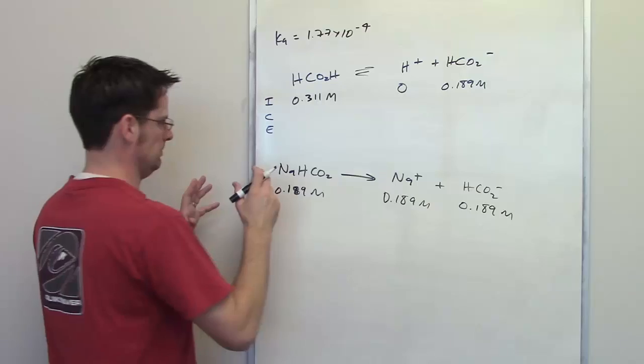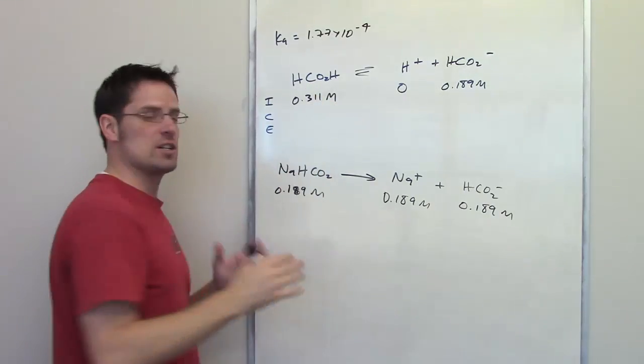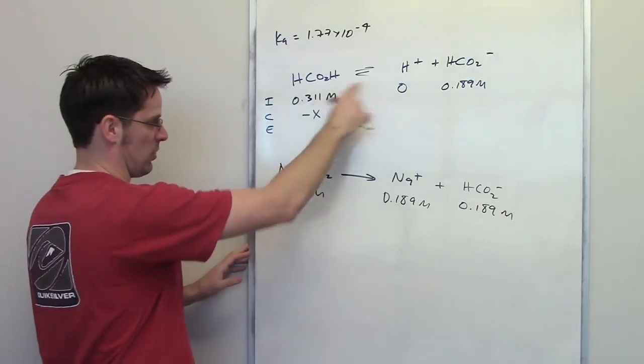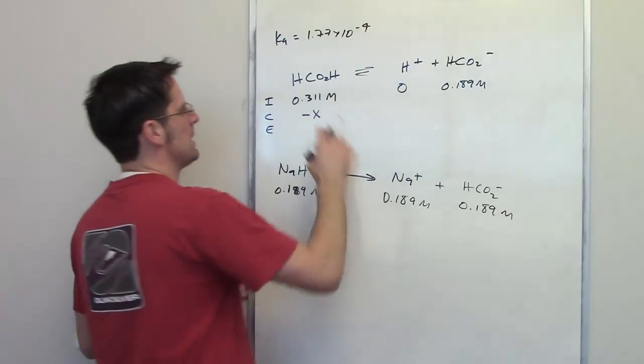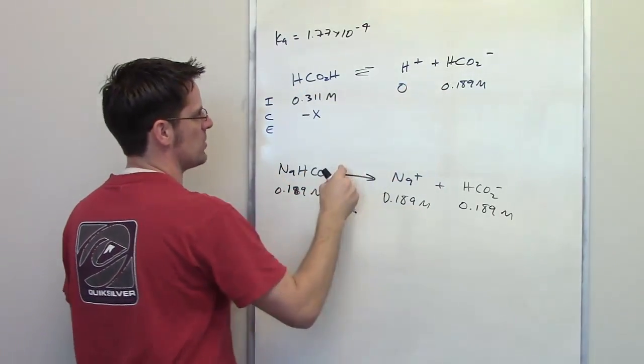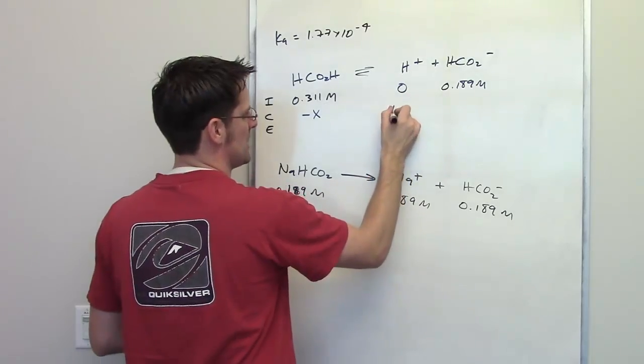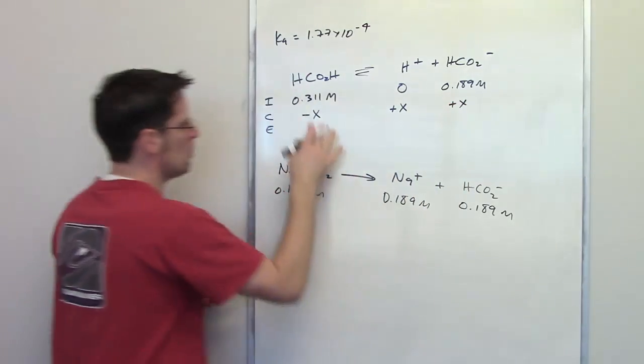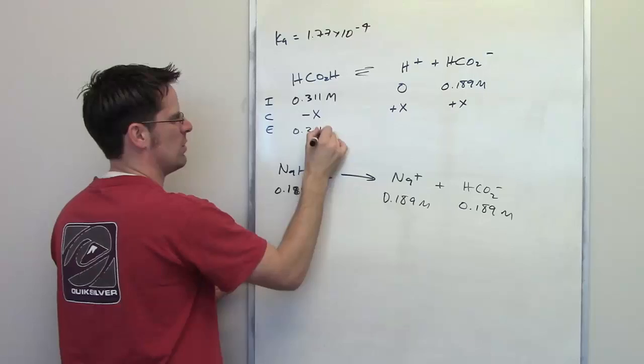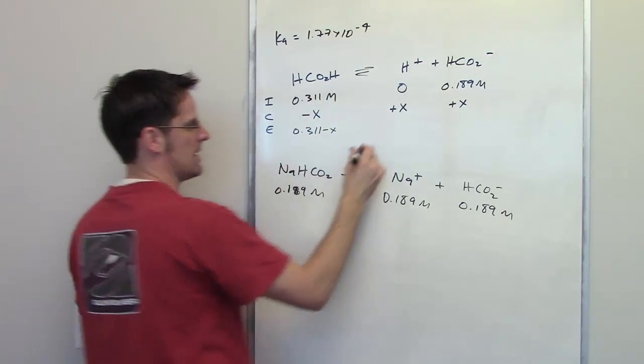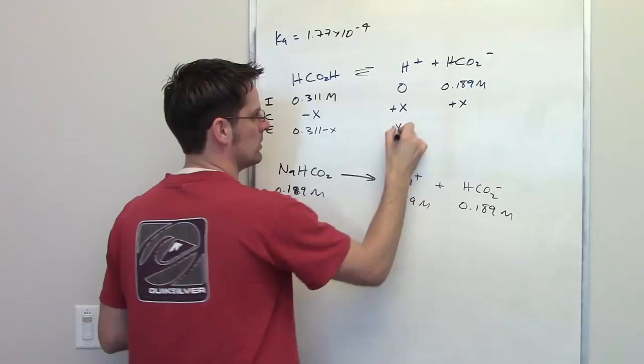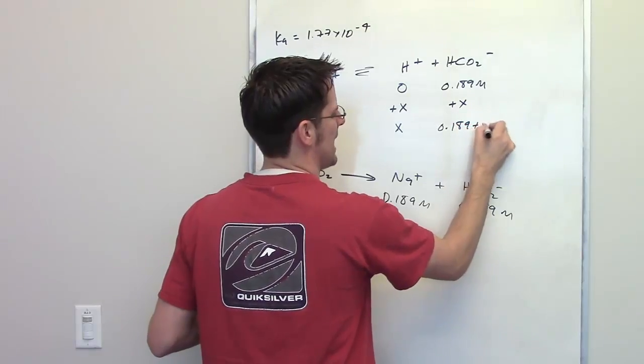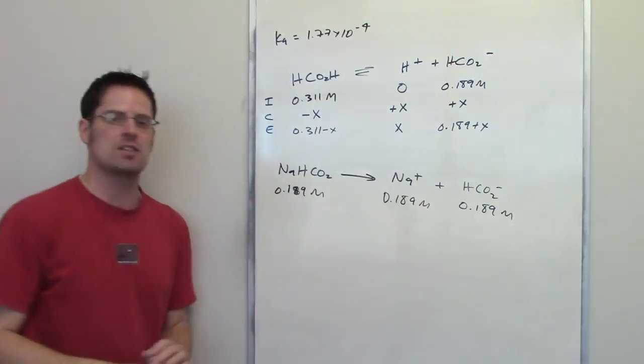Let's move forward then. So, gradually, the concentration of formic acid is going to change by an amount, which I will call X, and it's going to decrease as this goes back and forth and back and forth until reaching equilibrium. Because it's present in a 1 to 1 to 1 ratio with these ions on the right, the H+ concentration is going to increase correspondingly by plus X, as is the formate concentration. We add row 1 to row 2, we get 0.311 minus X as the final equilibrium concentration of formic acid, 0 plus X, or just X, as the final equilibrium concentration of H+, and 0.189 plus X as the final equilibrium concentration of HCO2 minus, or formate.